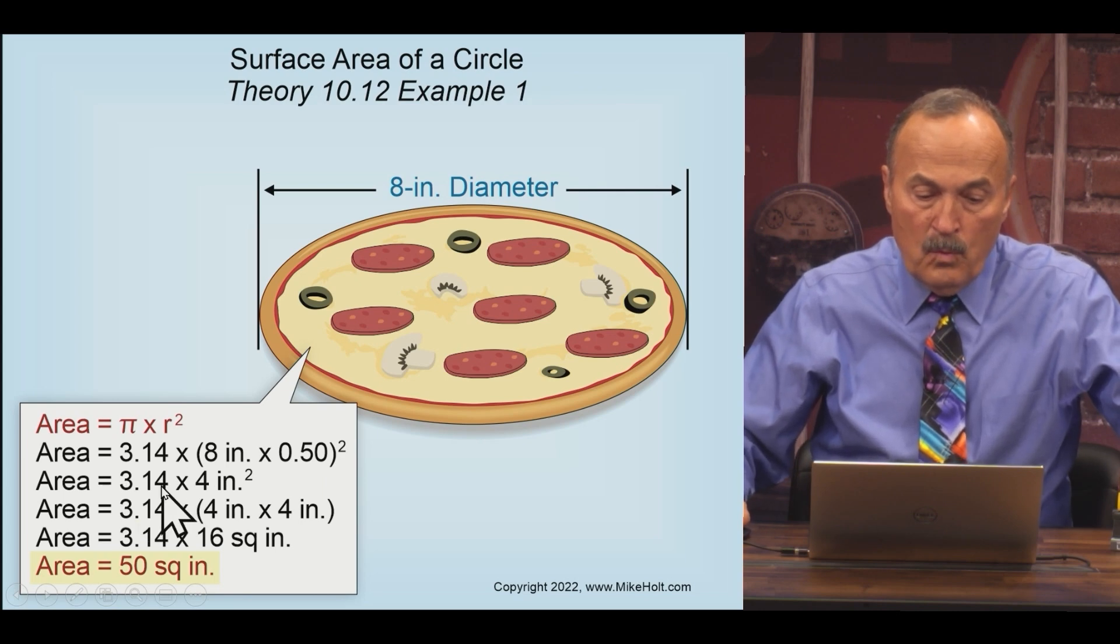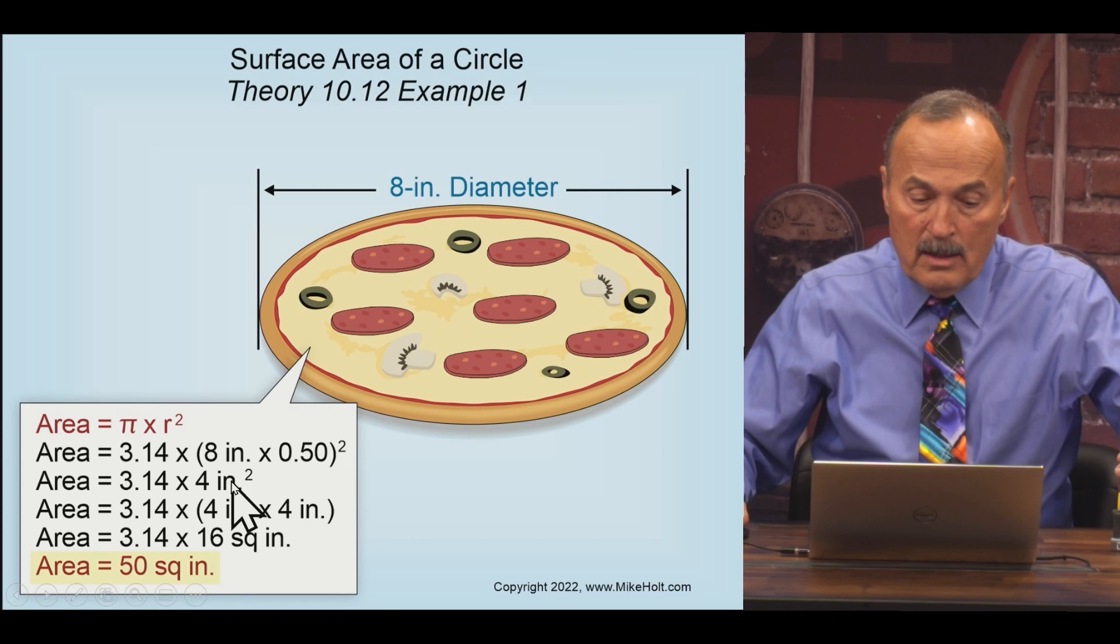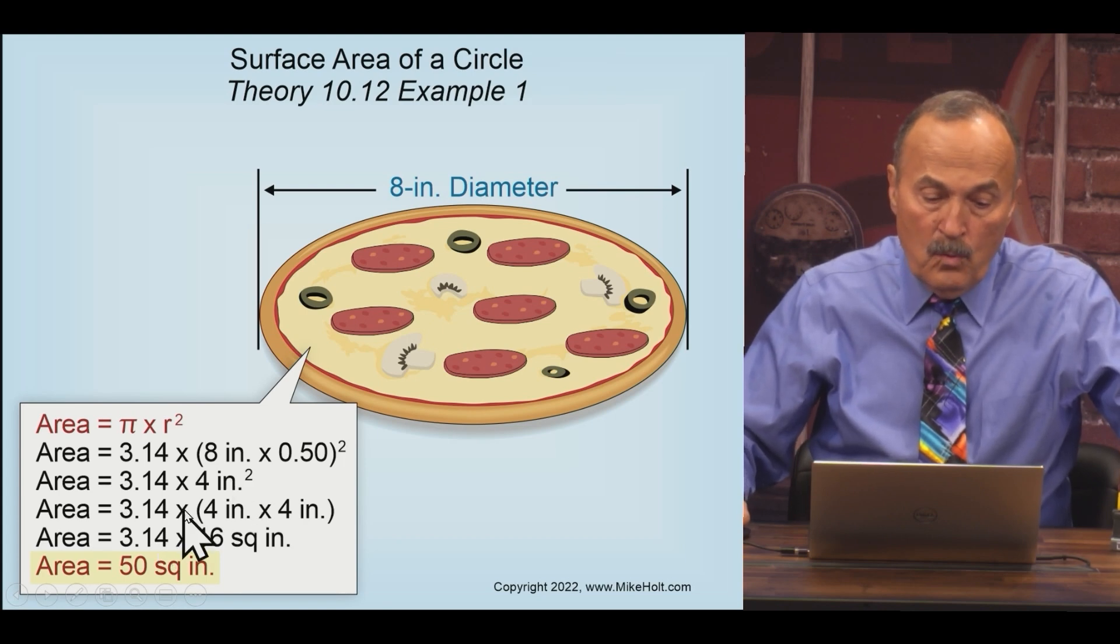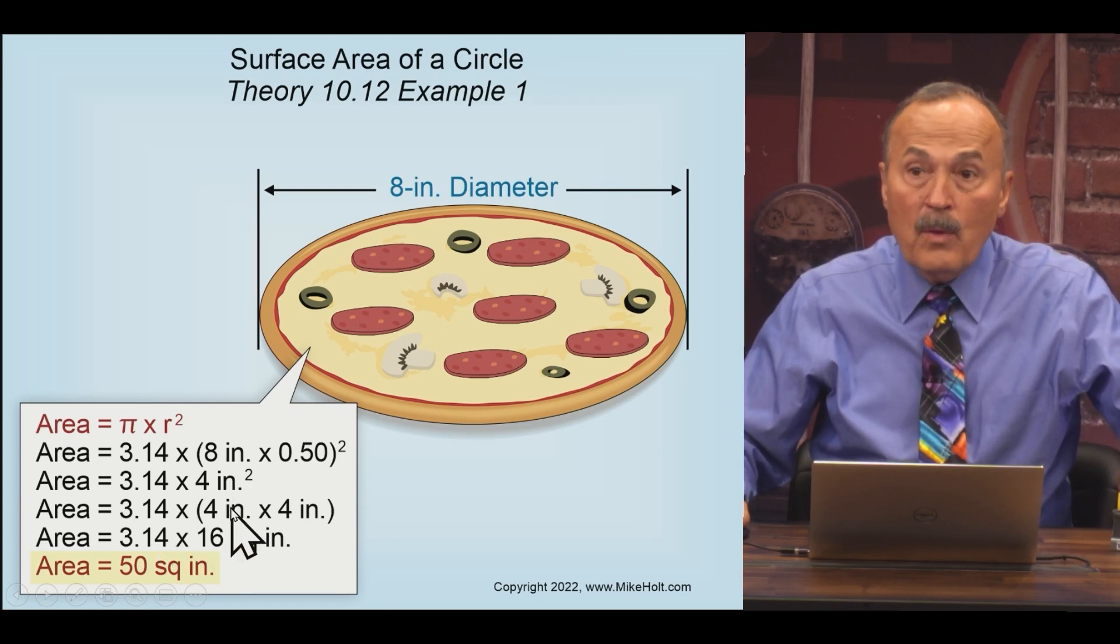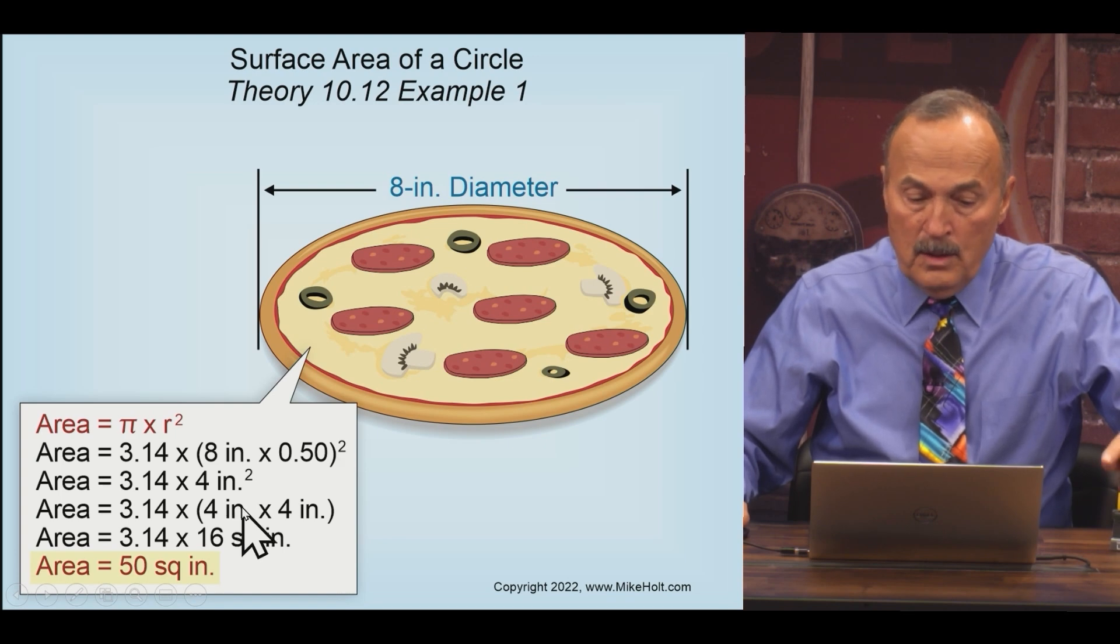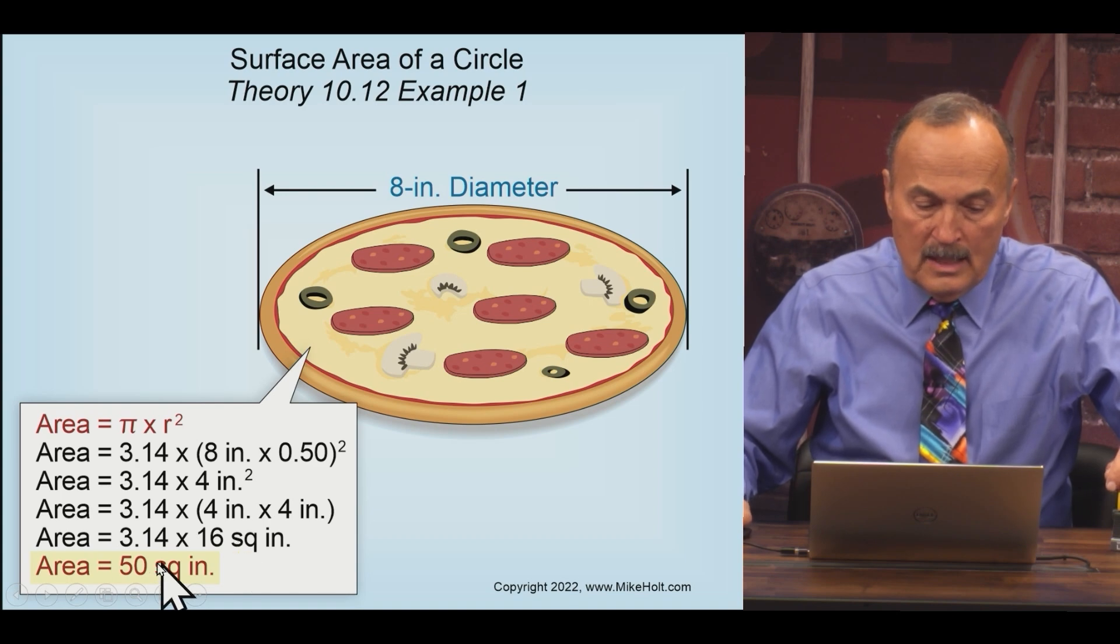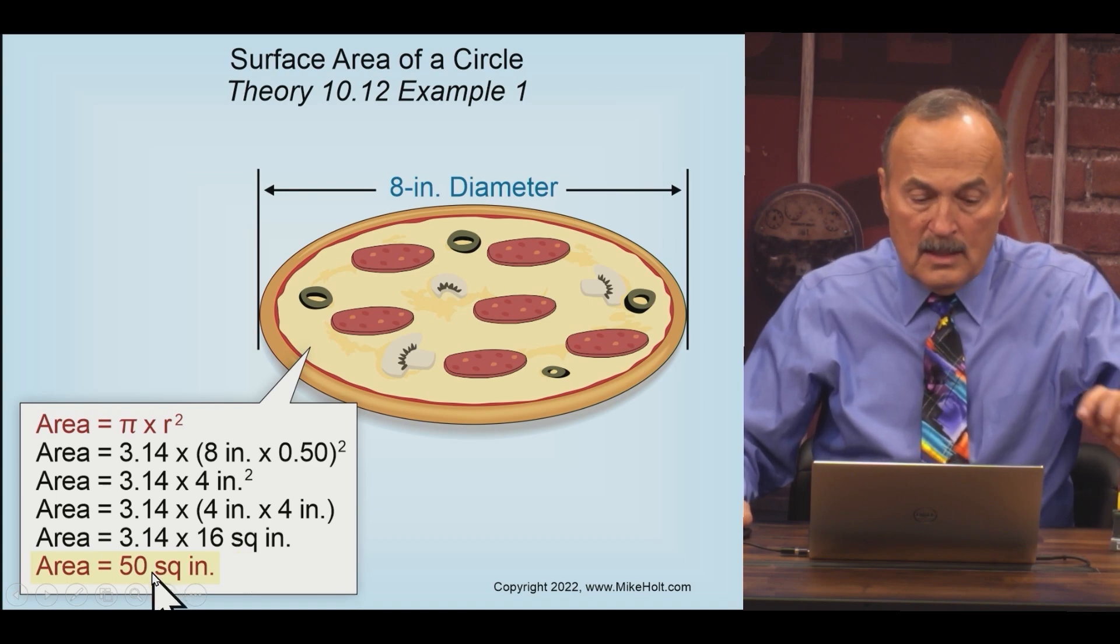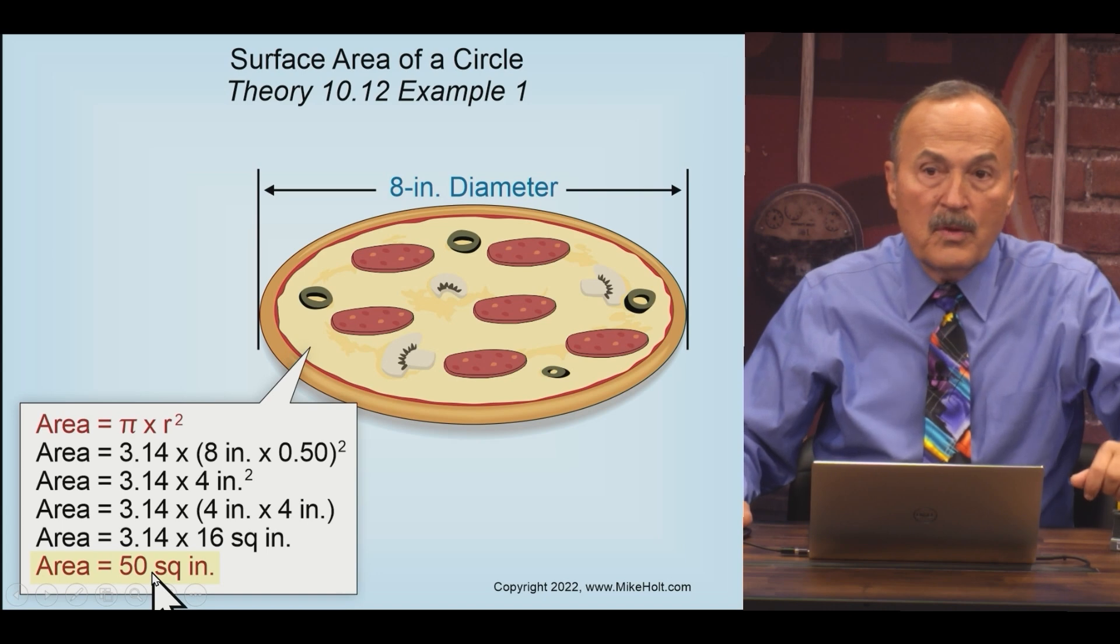So it's going to be 3.14 times four inches squared, which is the radius squared. We talked about squaring a number - multiplying by itself. Four times four, well then it's 3.14 times 16, which comes out to be - I wonder what that number comes out to be - very close to 50, and we rounded it off.